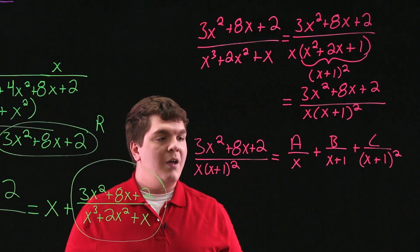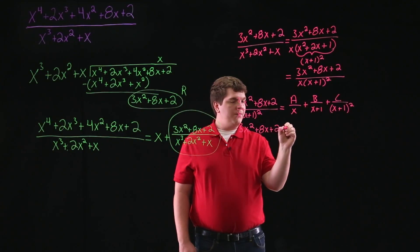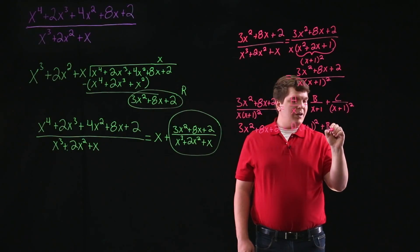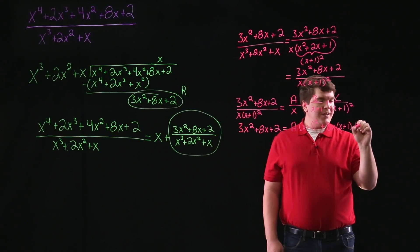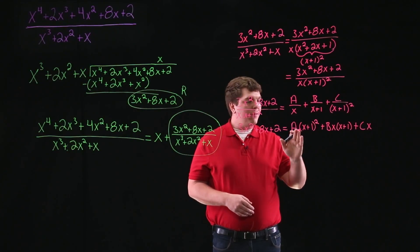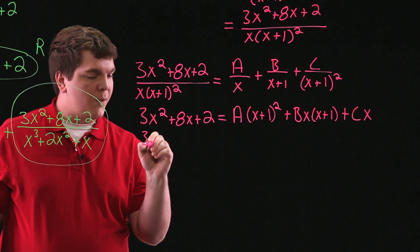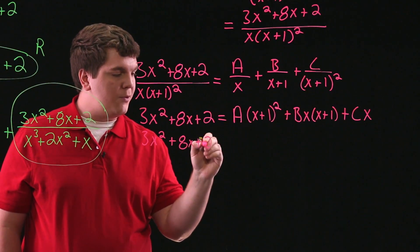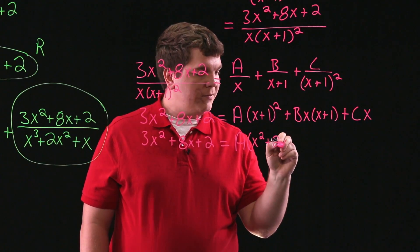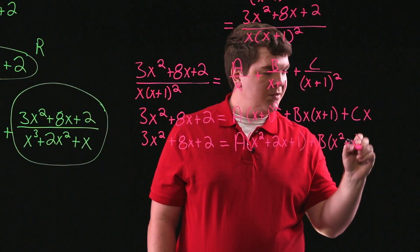Now here we can multiply through by the least common denominator, which leaves us with 3x squared plus 8x plus 2 is equal to A times x plus 1 squared plus B times x times x plus 1 plus C times x. Now what we can do is expand x plus 1 squared and rearrange the right-hand side of this equation, then equate coefficients to solve for A, B, and C. So we have 3x squared plus 8x plus 2 equal to A times x squared plus 2x plus 1 plus B times x squared plus x plus Cx.